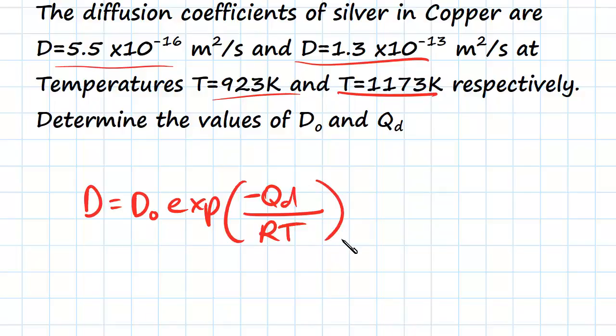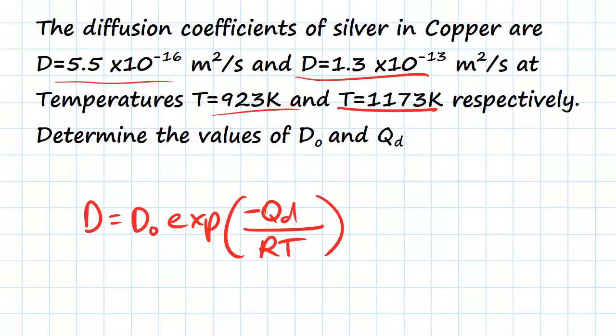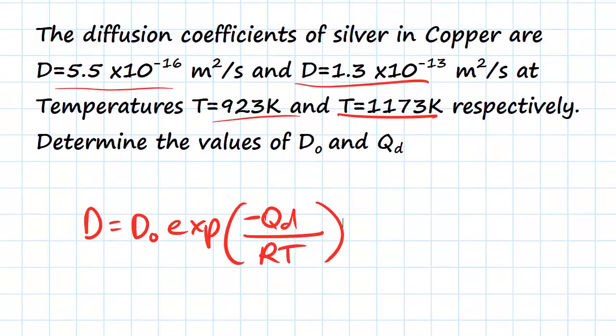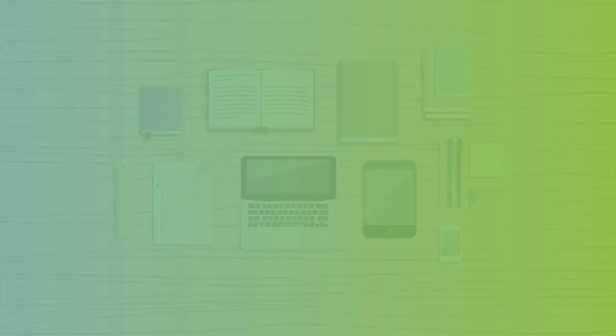As you can see, diffusion is given in the units meters squared per second. That's really what we're talking about — how much area is being diffused into per unit.